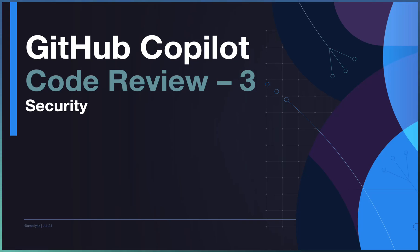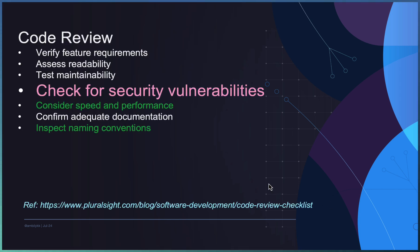Welcome to another episode of GitHub Copilot. Today we are looking at code review. We covered two videos in code review: one targeting naming conventions, the other specific to performance and speed. Now today's episode we are going to check security vulnerabilities — how we can use GitHub Copilot for reviewing code against security vulnerabilities.